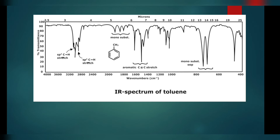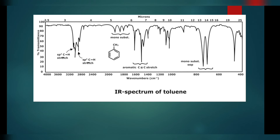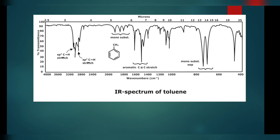Moving on to the next example of toluene. We have an sp3 C-H stretch at about 3000 and an sp2 C-H stretch at around 3100–3200. This peak here indicates an aromatic C=C stretch, and these peaks show monosubstitution. Our result is toluene — a monosubstituted benzene.